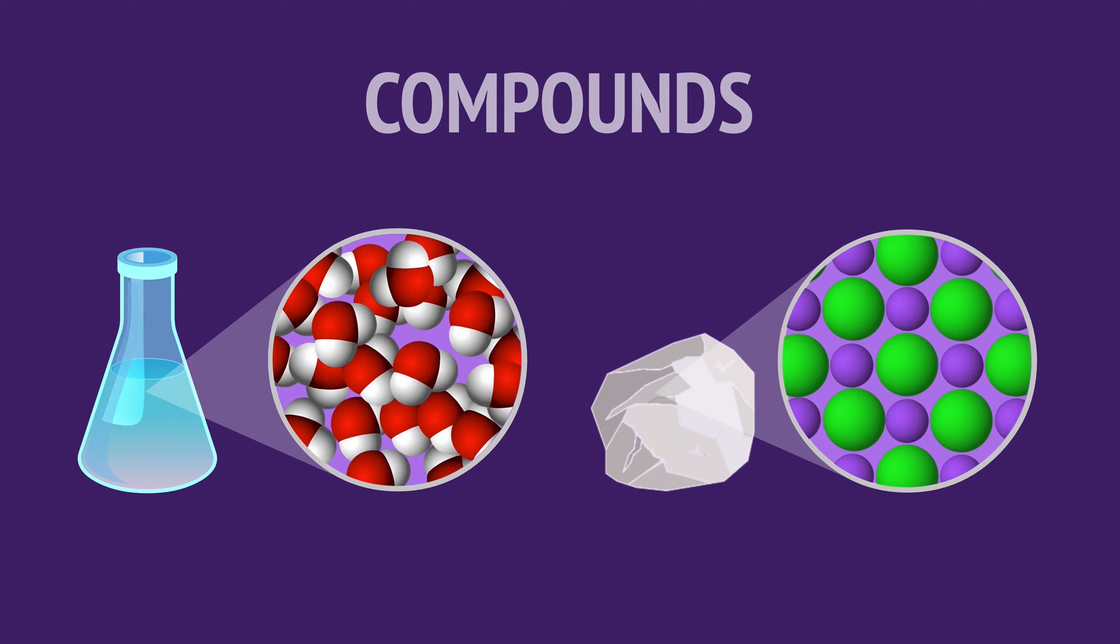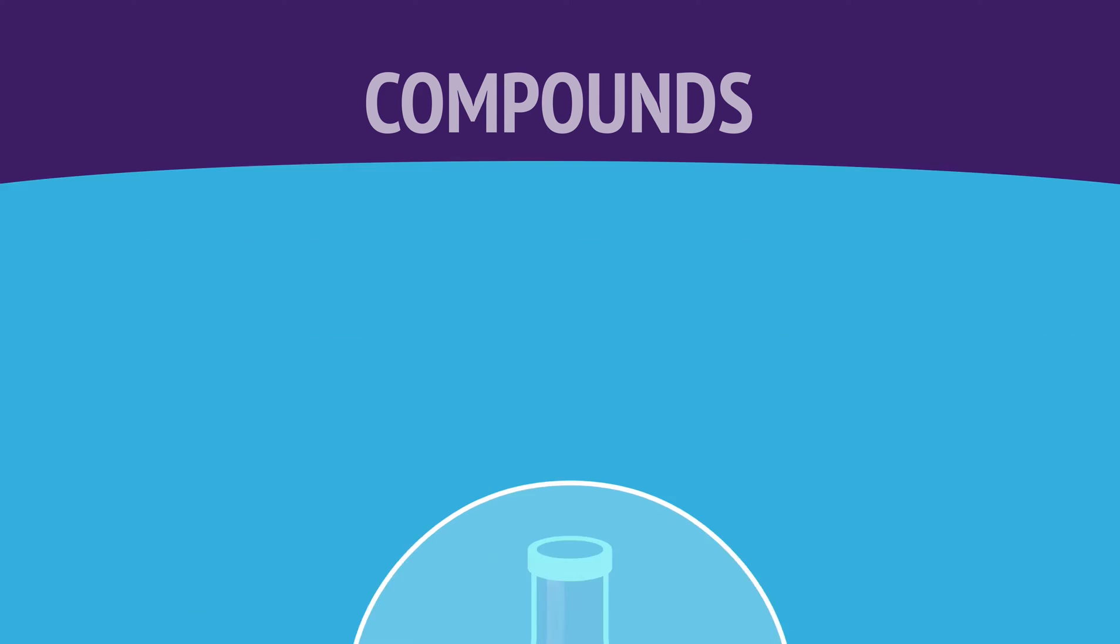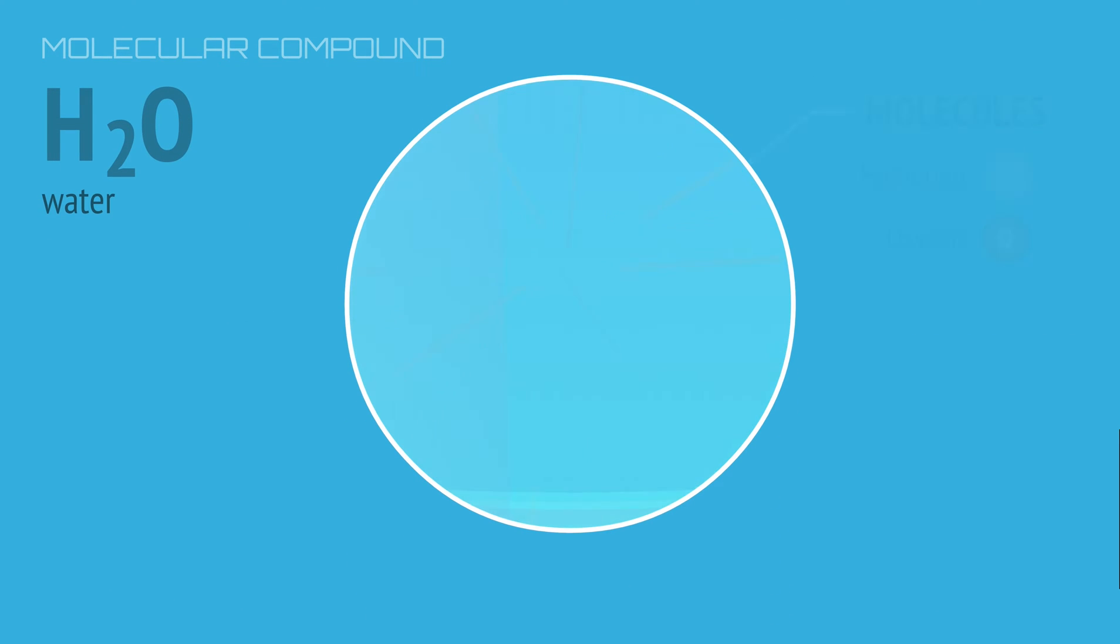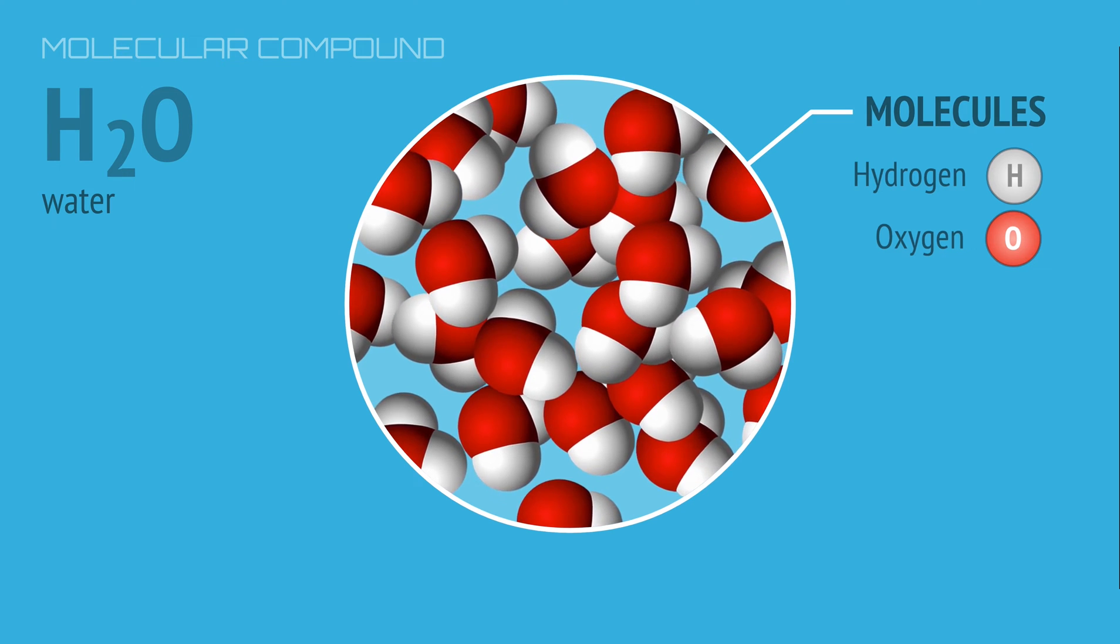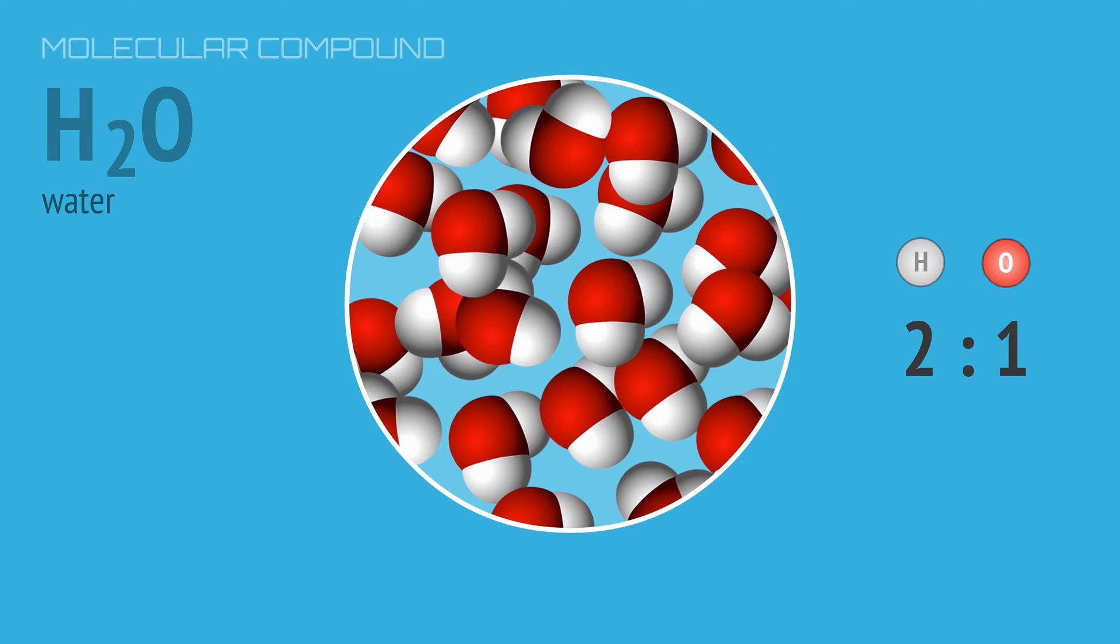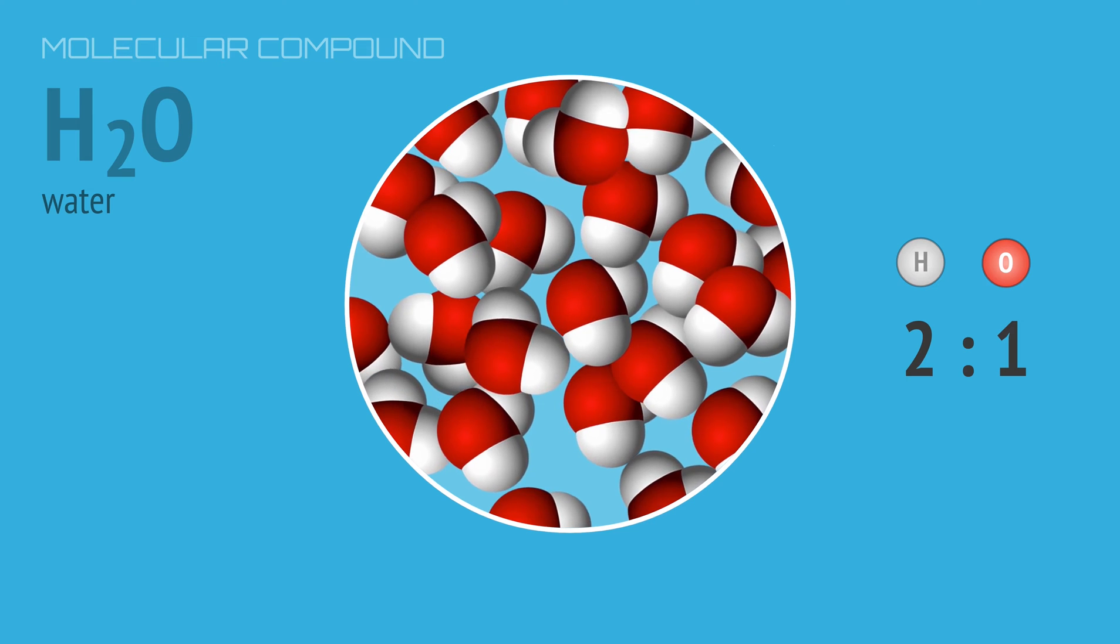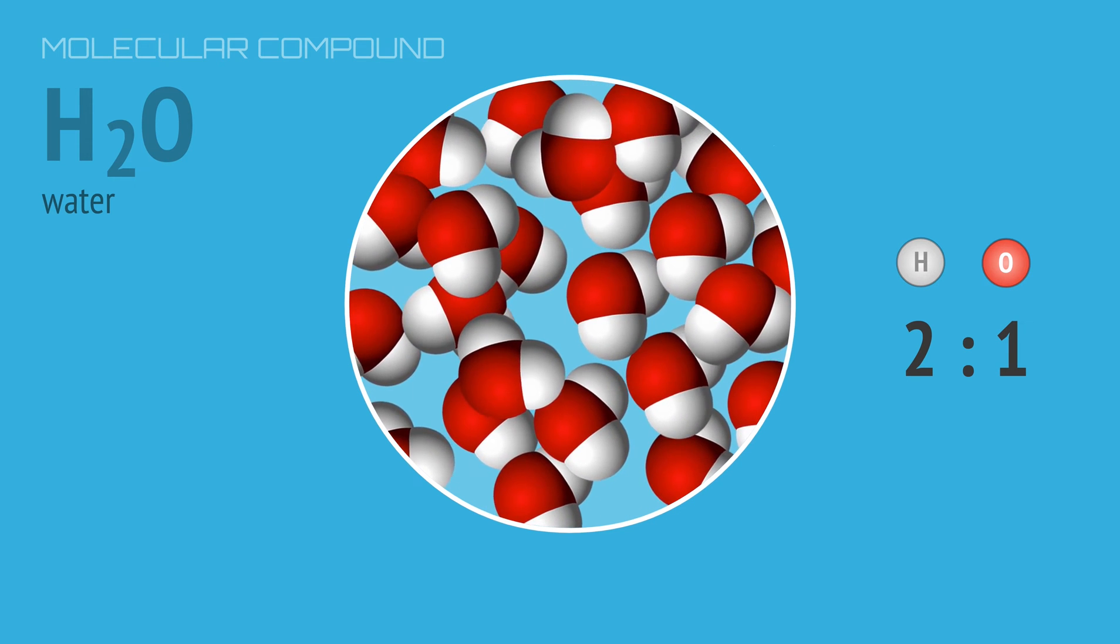A compound is a substance made of two or more elements that have chemically combined. Water is a compound made of the elements hydrogen and oxygen bound together as molecules. Each water molecule has two hydrogen atoms bonded to one oxygen atom, giving a two-to-one ratio of hydrogen to oxygen. And elements will always combine in fixed ratios when forming compounds.